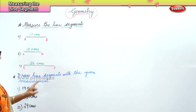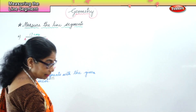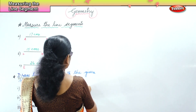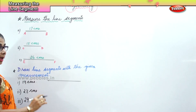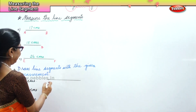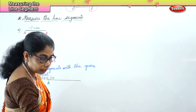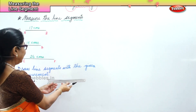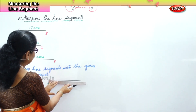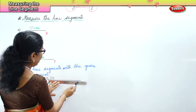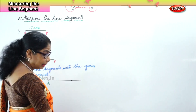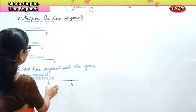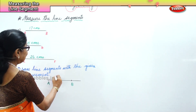So you are going to draw line segments with the given measurements. First of all, keep the ruler and simply draw a line, mark out a point, and write that point as A. Then you take your ruler, put it on point A, and look out for nineteen centimeters. Put the zero on point A, look out for number nineteen, and mark that point as B. Line segment A-B is nineteen centimeters.